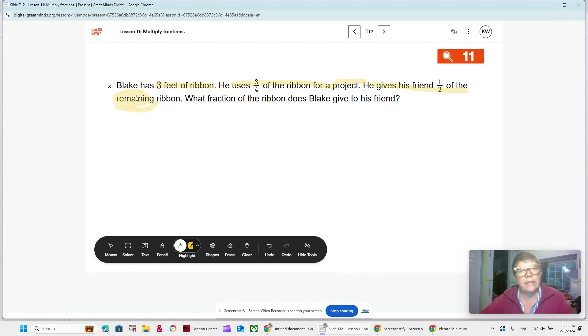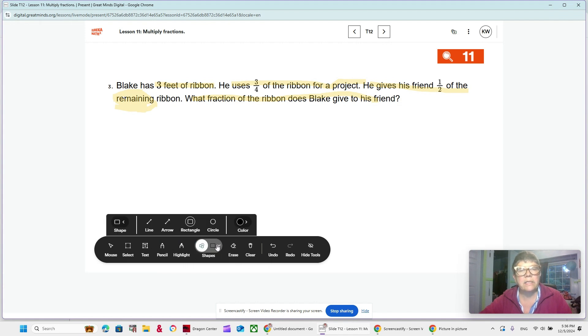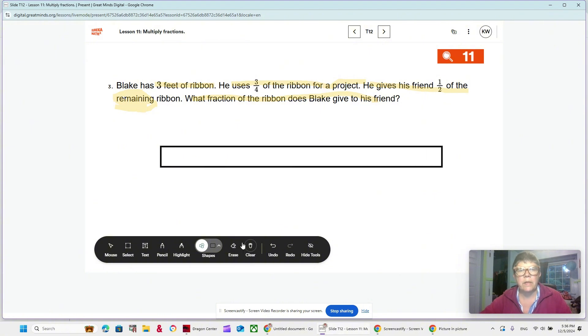So, let's say three feet of ribbon. He uses three-fourths of the ribbon for a project, and then he gives his friend one-half of the remaining ribbon. Once again, there's that word remaining, left over, okay? And then the question is, what fraction of ribbon does Blake give to his friend? So, let's get a shape here, and let's make a tape diagram. Here's our ribbon, and how much ribbon is it? It's three feet of ribbon. That's important because that's what we're starting with, three feet of ribbon.